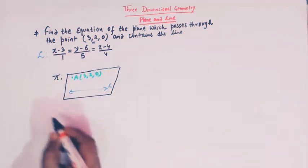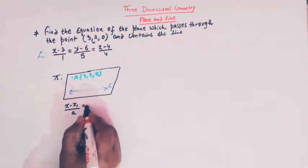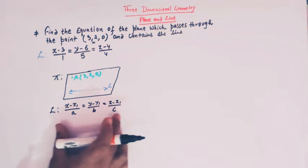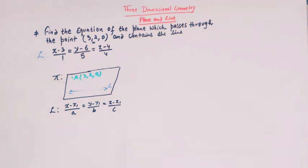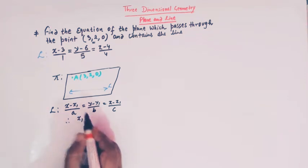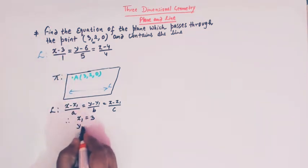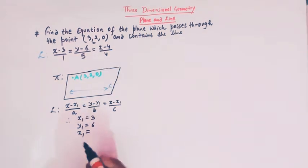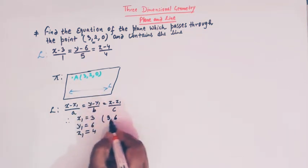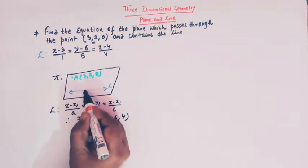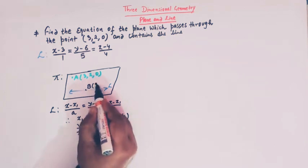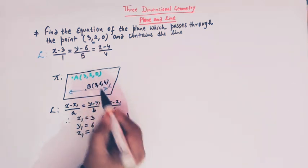We know that the standard form of the equation of a line is given by x minus x1 over a, y minus y1 over b, and z minus z1 over c. Comparing these two equations, we see that x1 is 3, y1 is 6, and z1 is 4. This implies that line l passes through the point (3, 6, 4), which we label as point B.